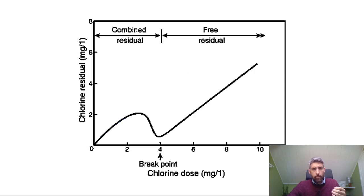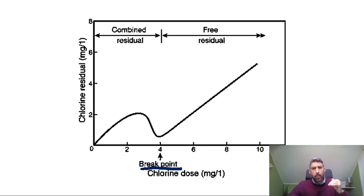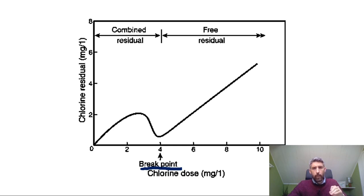What we want is to achieve this breakpoint. For the practical part of this, the key is to monitor the water and be aware of when you're achieving breakpoint chlorination. The standard in the UK is that if your combined chlorine is half or less than the free chlorine, that is an indication that you are achieving breakpoint chlorination. So when you look at your pool test log sheets, if you're consistently seeing that your combined chlorine level is lower than 50% of your free chlorine level, you can take that as an indication that you are in fact achieving breakpoint chlorination.